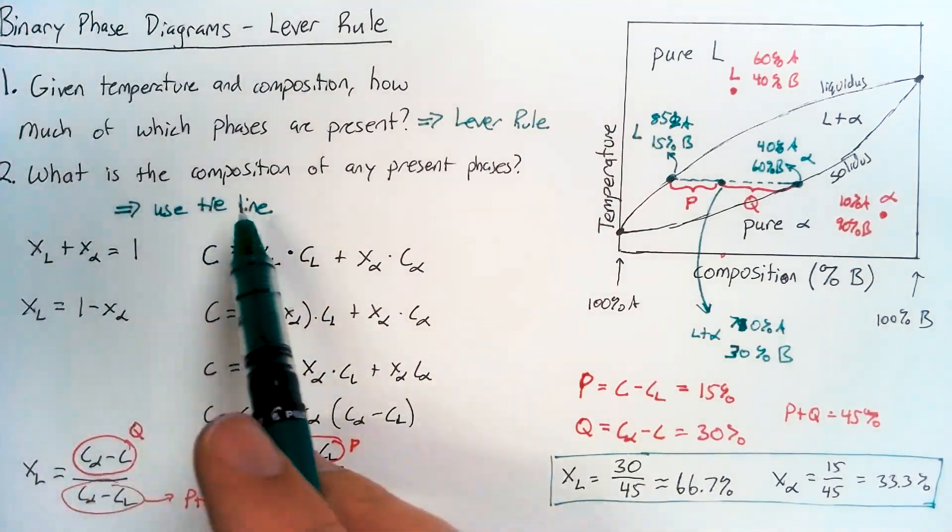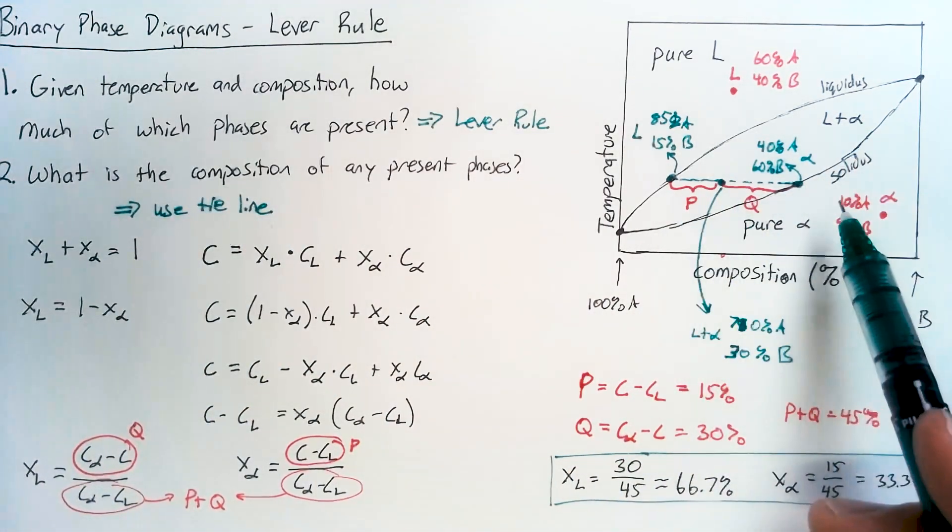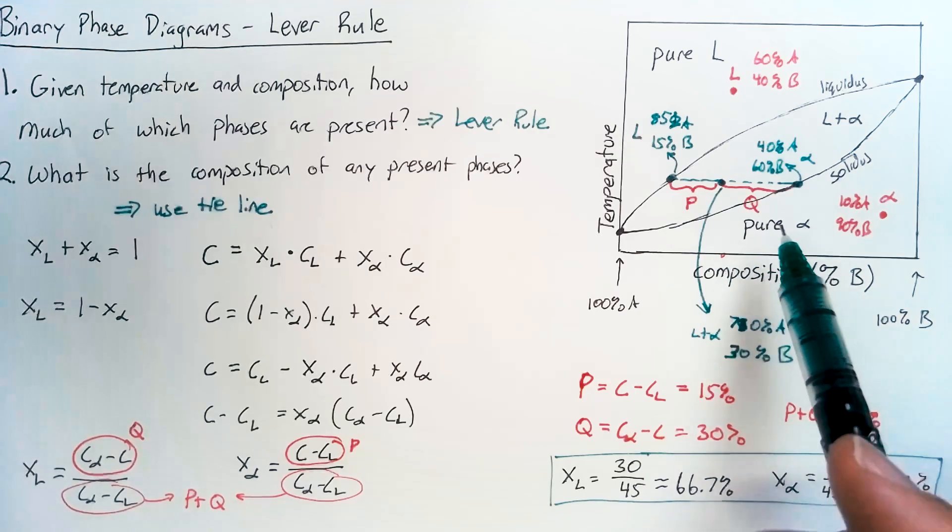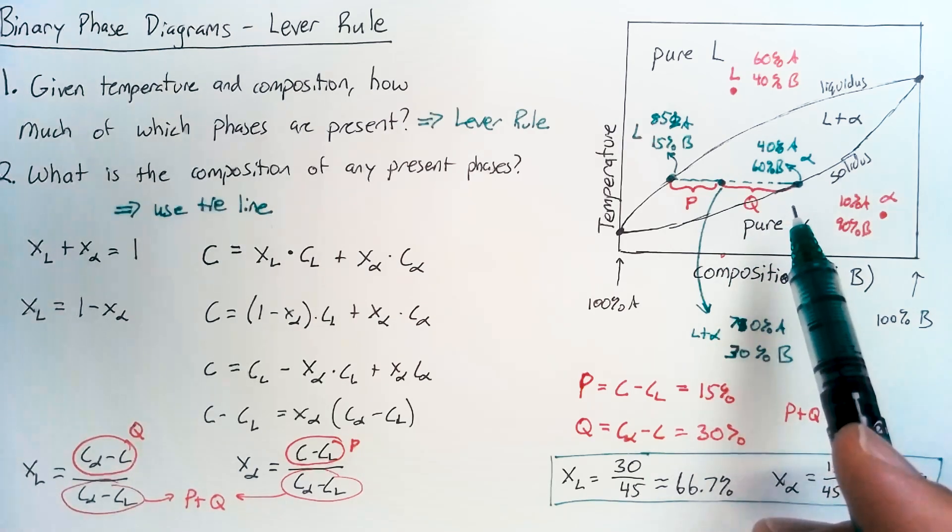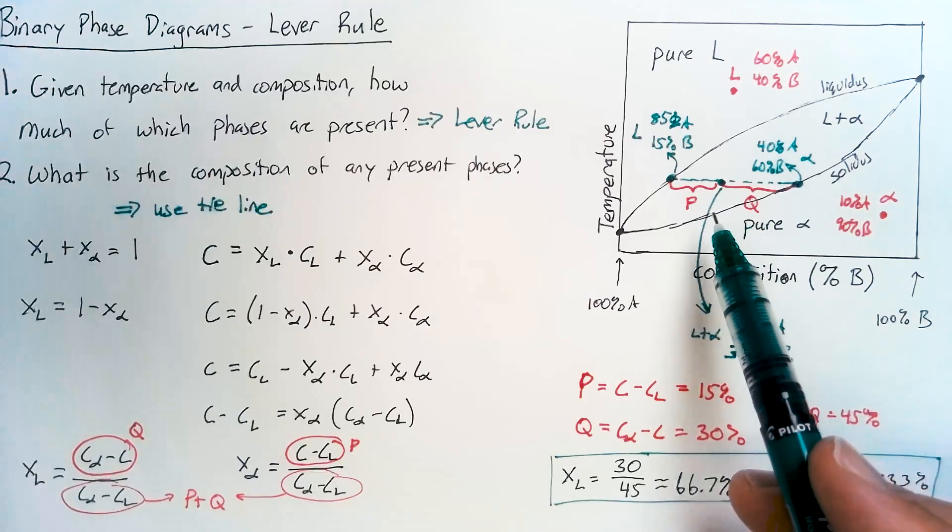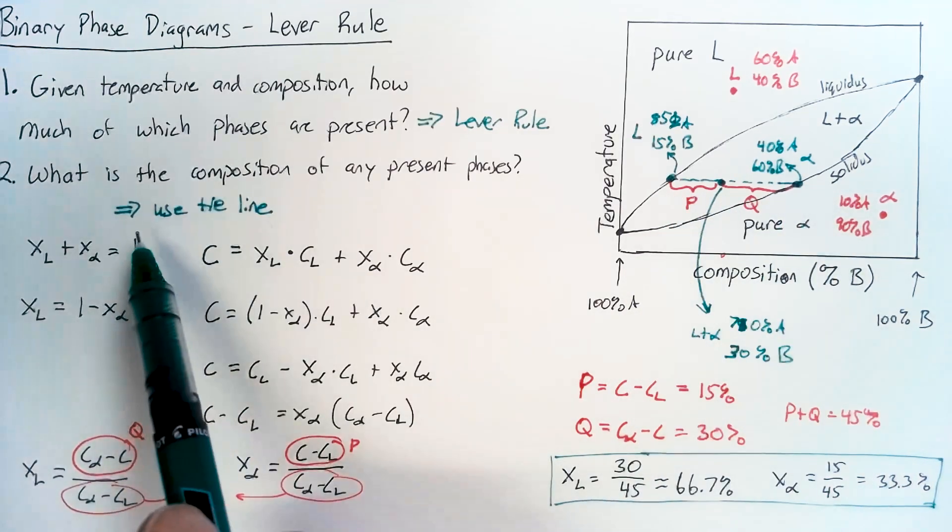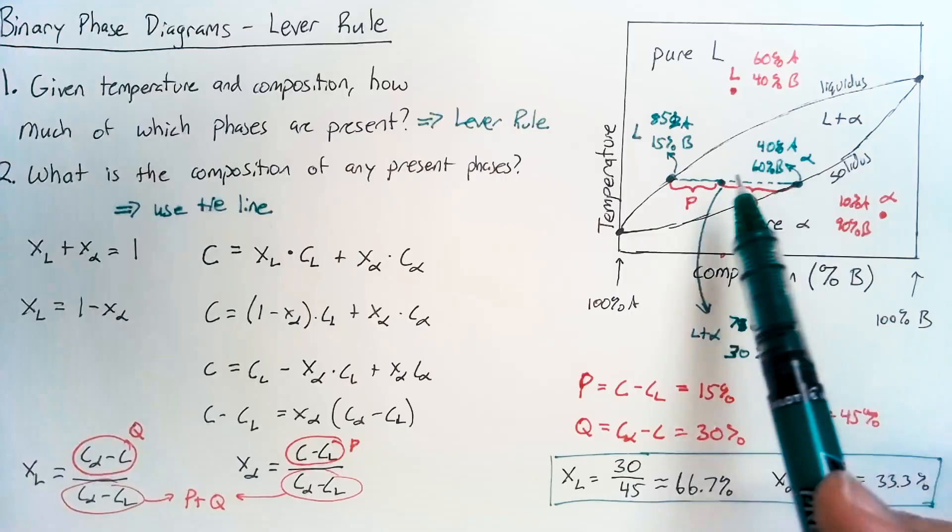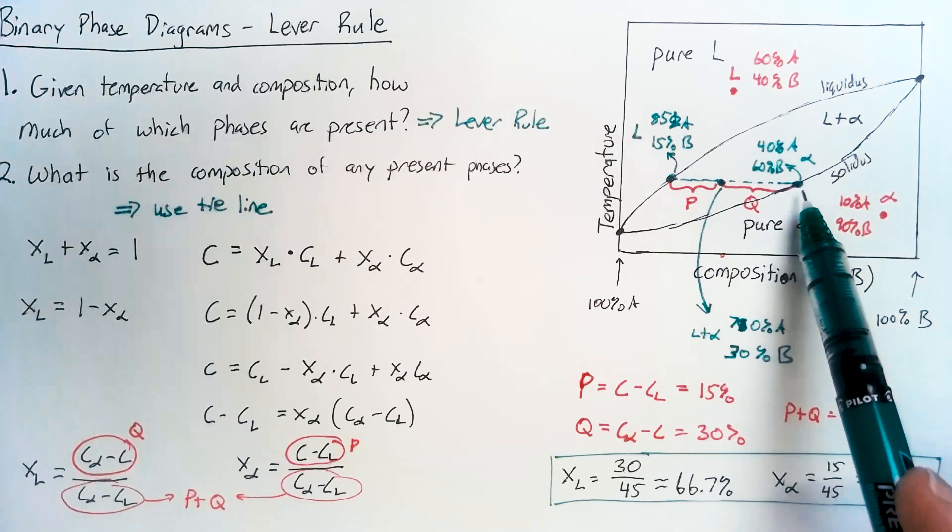So to sum up, if we want to know what phases are present, we can read that pretty easily off of the binary phase diagram. In order to figure out the composition of what phases are present, we just use the tie line. We just draw a straight line through the liquidus and solidus lines.